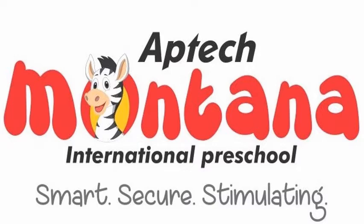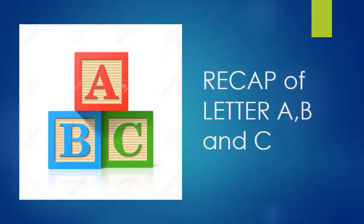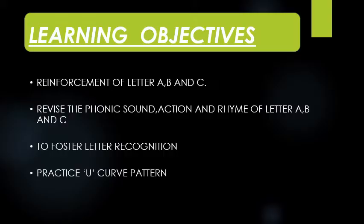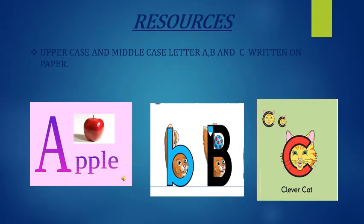Now children, this is time for us to start our first activity for today which is reinforcement of letter A, B and C. The learning objectives for this activity are reinforcement of letter A, B and C — revise the phonic sound, action and rhyme of letter A, B and C to foster letter recognition and practice U-curve pattern. Resources required for this activity are uppercase and lowercase letter A, B and C written on a paper.